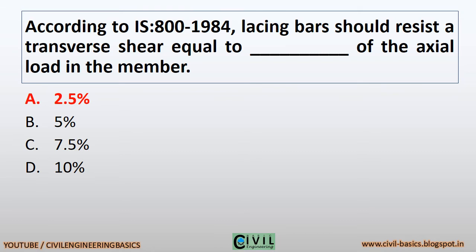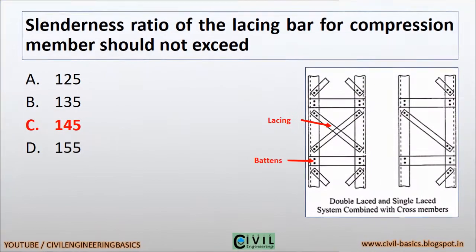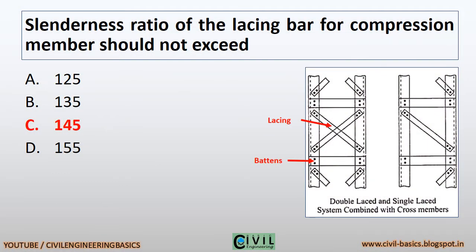Lacing bars should resist a transverse shear equal to 2.5% of the axial load in the member. The slenderness ratio of the lacing bar for a compression member should not exceed 145.